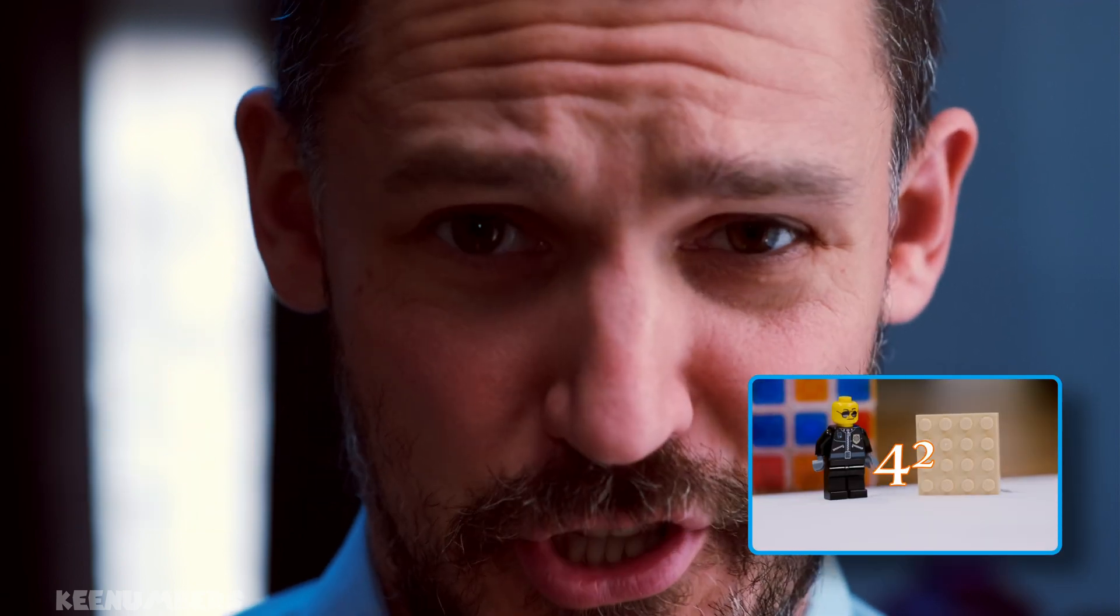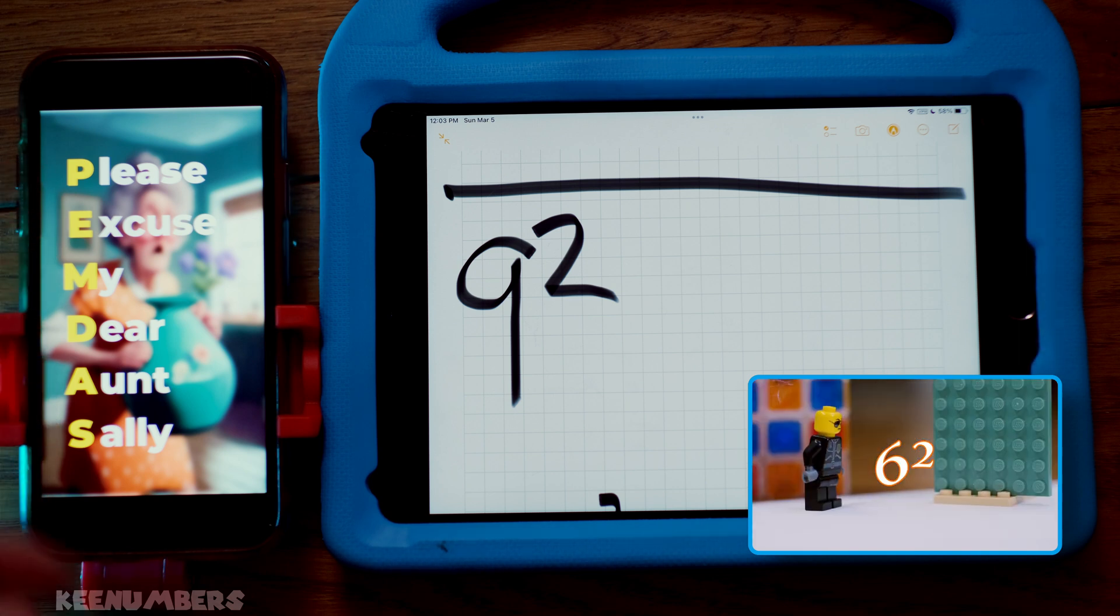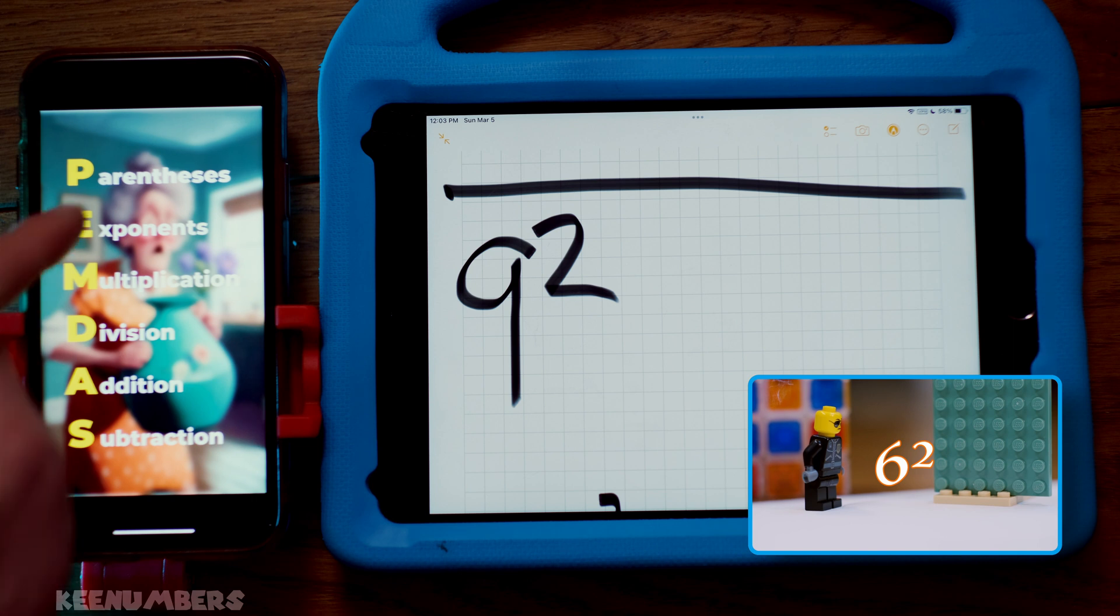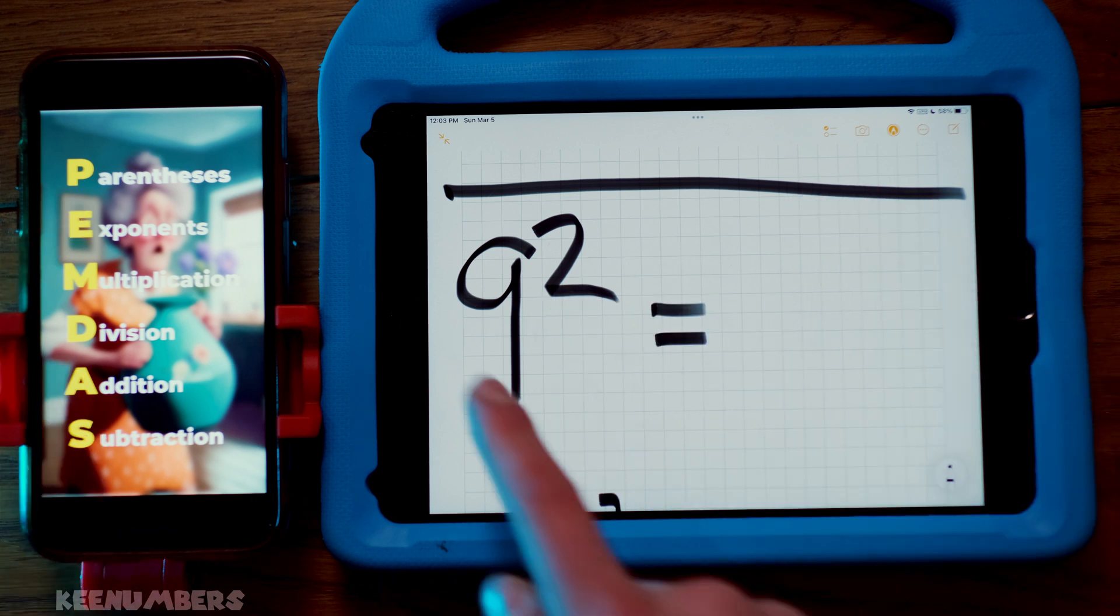E, exponents. We've talked about this in the previous video, but here's a quick refresher. E is for exponents in this memory device, please excuse my dear Aunt Sally.